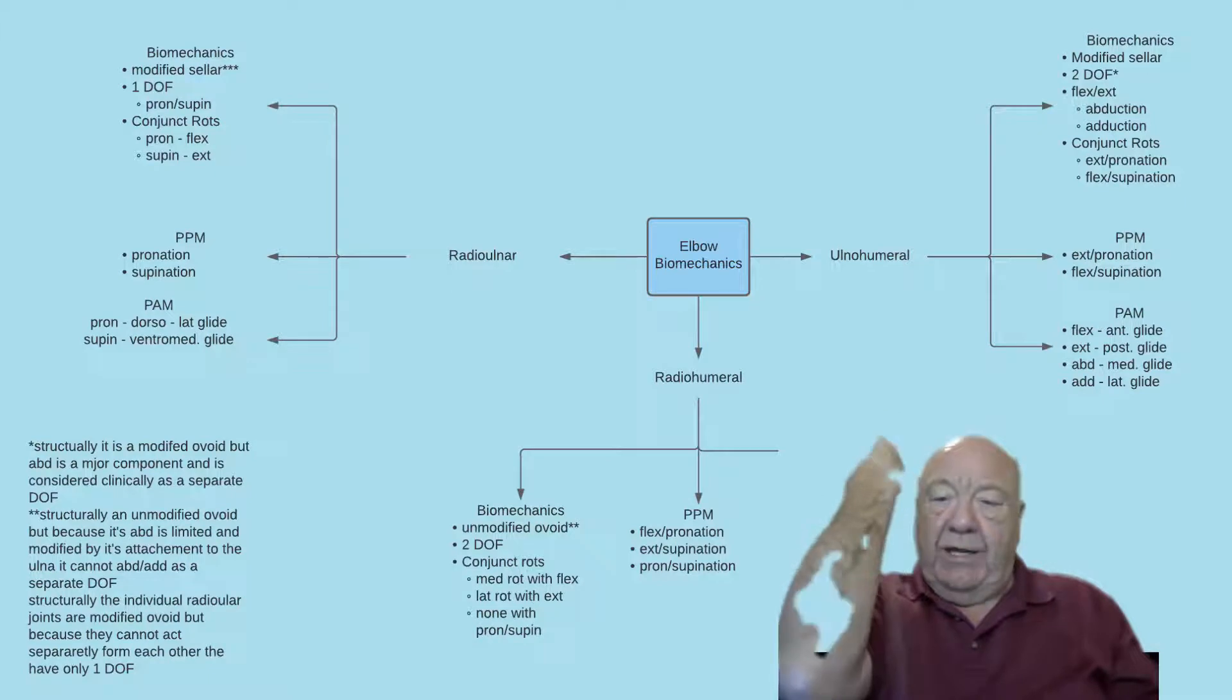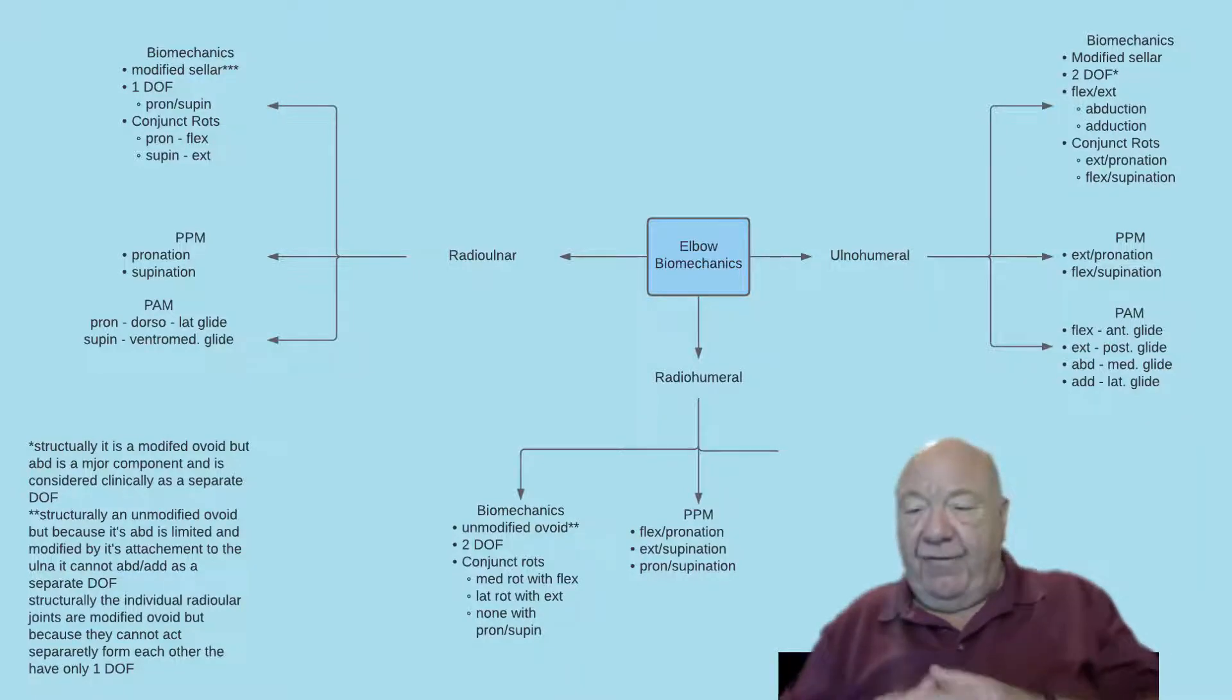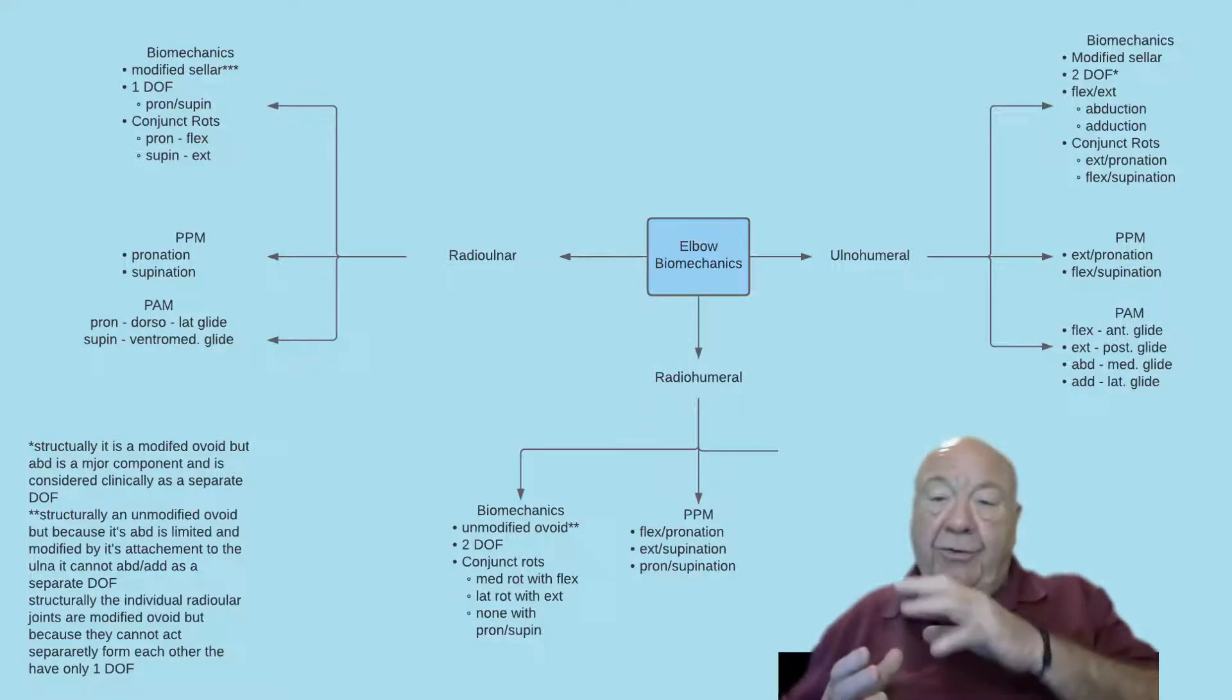For extension, the conjunct rotation of the ulna is medial. That is, it puts the arm into pronation. So again, to get full extension of the ulna, you have to incorporate full pronation. If you can't assess the full range, you can't assess the limited range, so these conjunct rotations have to be included.